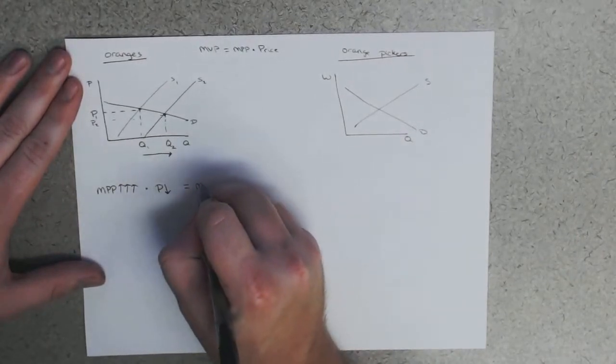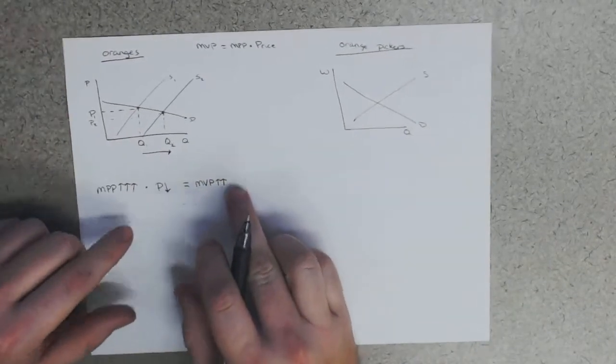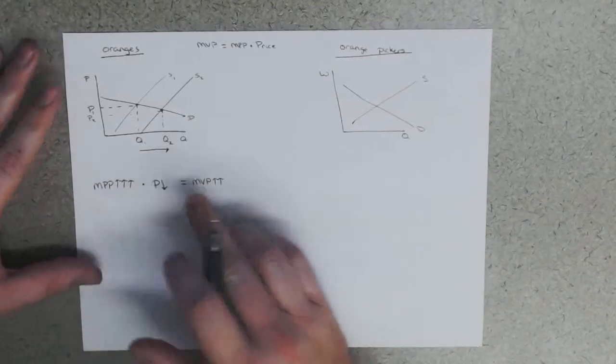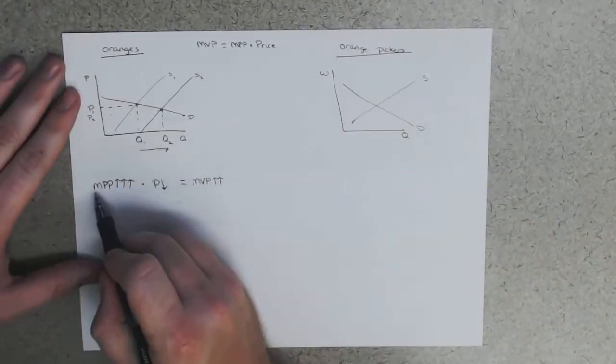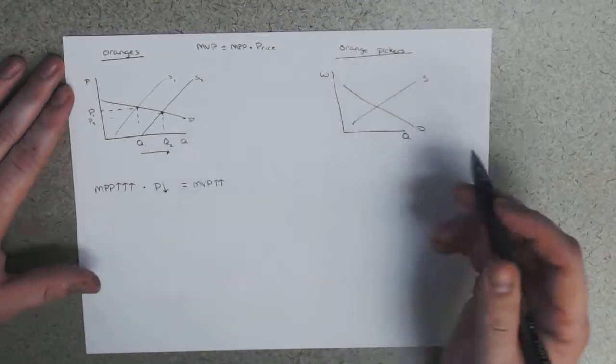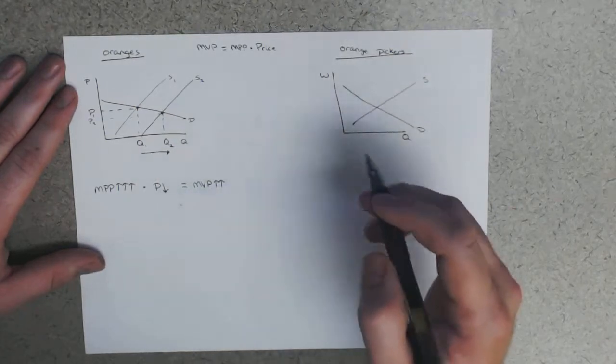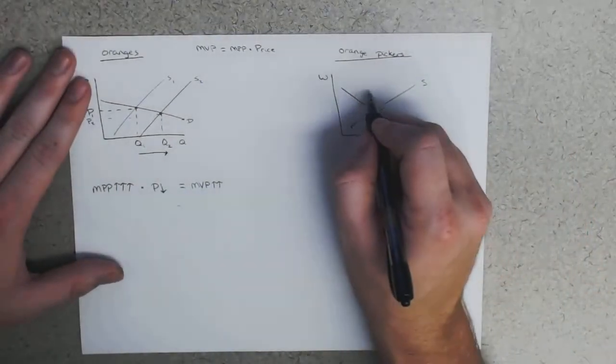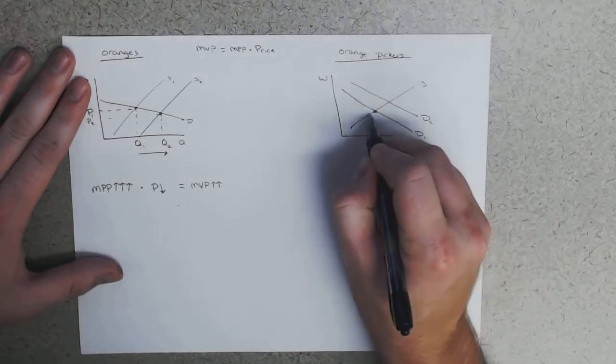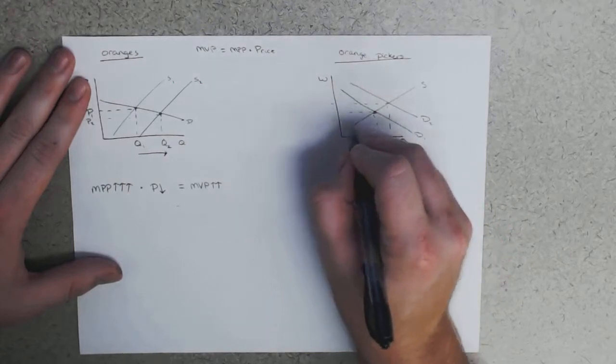Price has decreased but not by much, so it's decreased by a little bit. That's going to result in an MVP that's higher. If MPP increases by a lot and the price of the product decreases by only a little bit, then your MVP is going to go up. As a result, demand for orange pickers will increase.